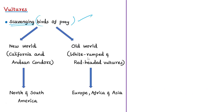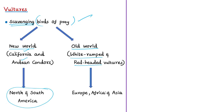Vultures are scavenging birds of prey and they have been divided into New World vultures and Old World vultures. New World vultures include the Californian condors and Andean condors, and Old World vultures include the white-rumped vultures and red-headed vultures. New World vultures are found in North and South America, and Old World vultures are found in Europe, Africa, and Asia.